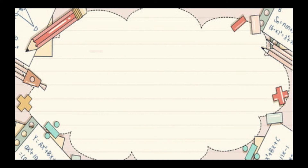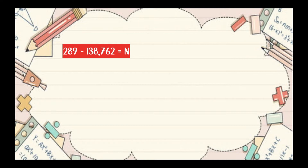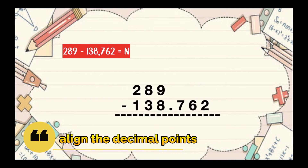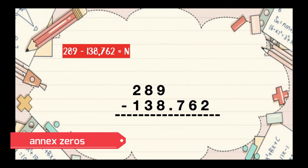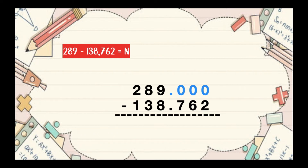Let's have another example. 289 minus 138.762 is equal to n. What do you think is the difference? Again, the first thing that we need to do is to align the decimal points just like this. As you can see, the subtrahend has decimals. That's why we need to annex zeros just like this. We can now subtract them.